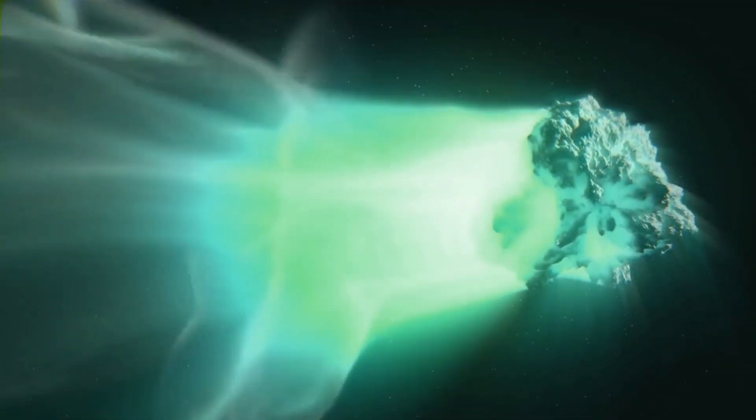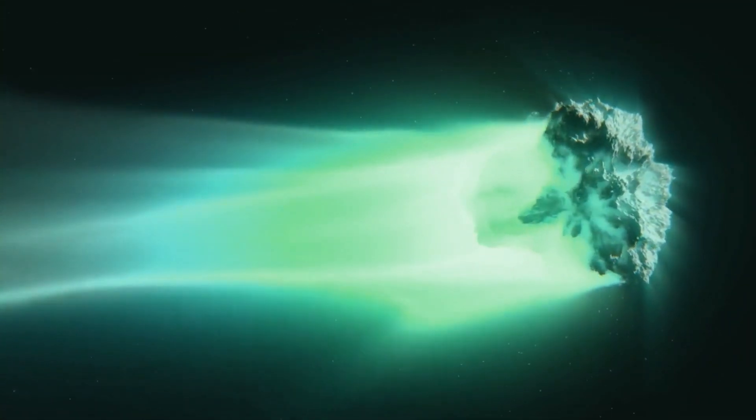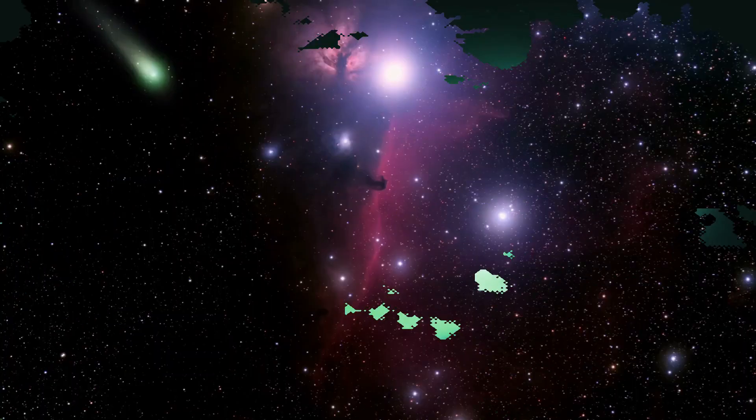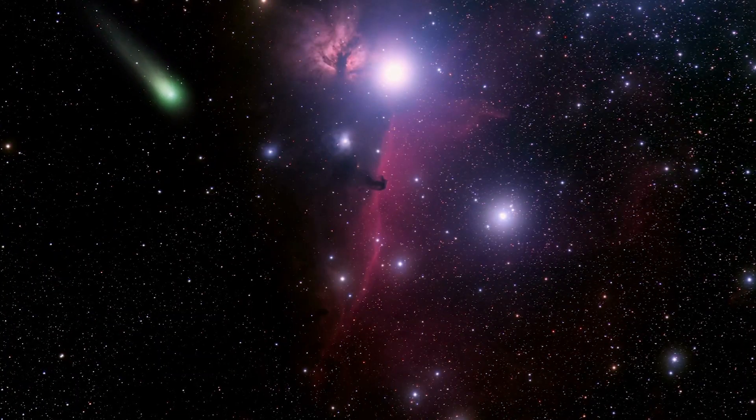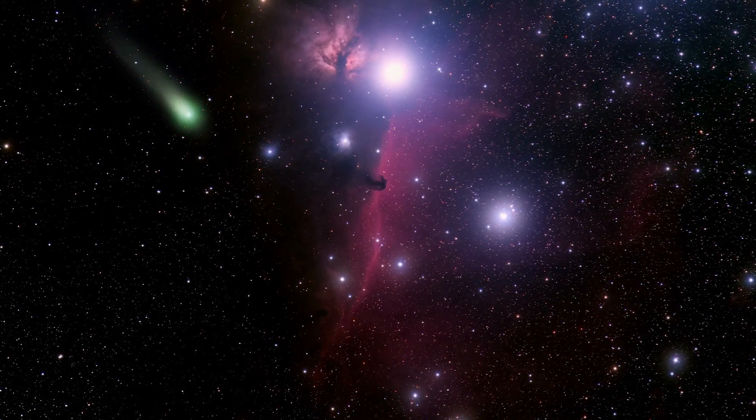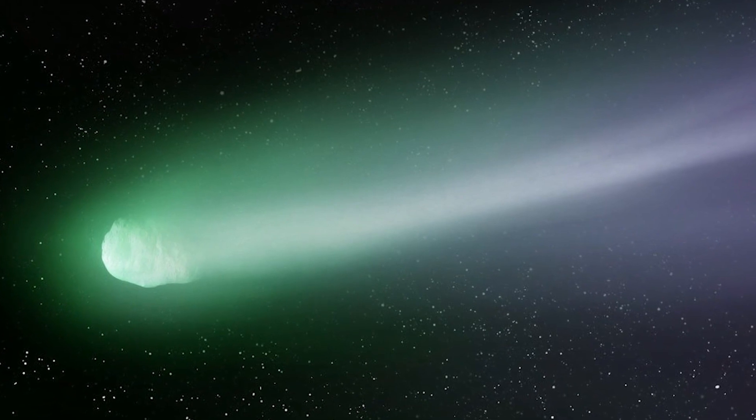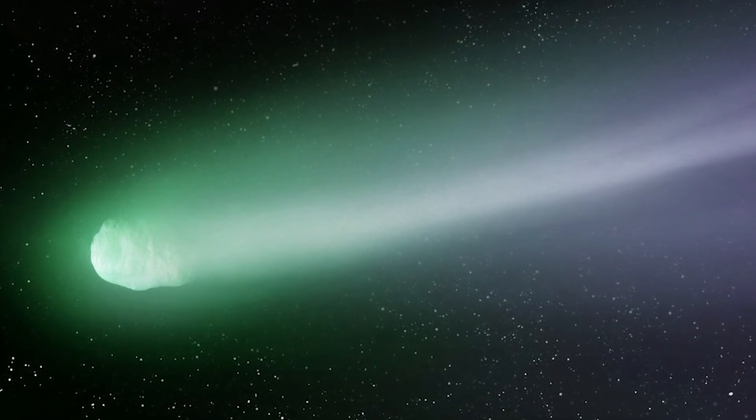As time progresses, Comet Nishimura will continue to increase in brightness. By September 5th, it is anticipated that it will reach fifth magnitude and potentially reach a level of brightness where it could be visible with the naked eye. Just four days later, its brightness may actually double, possibly reaching fourth magnitude.